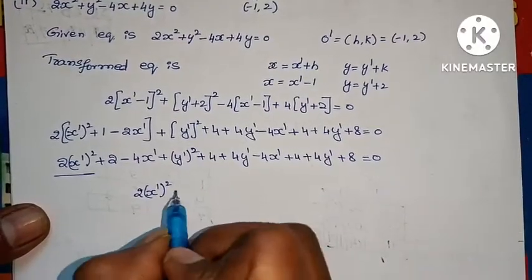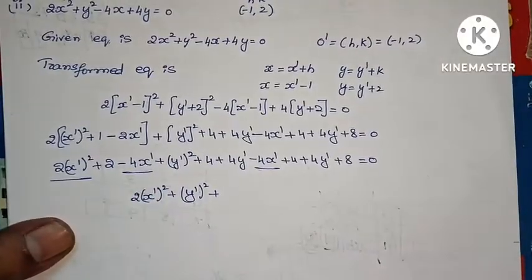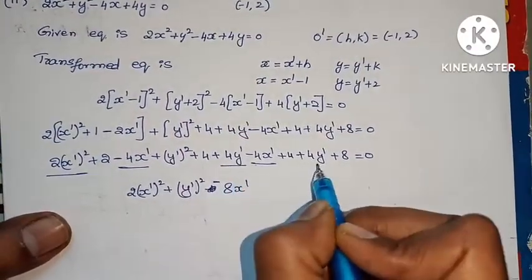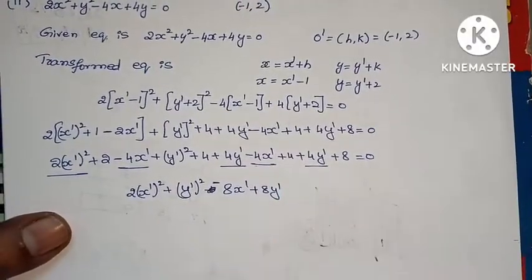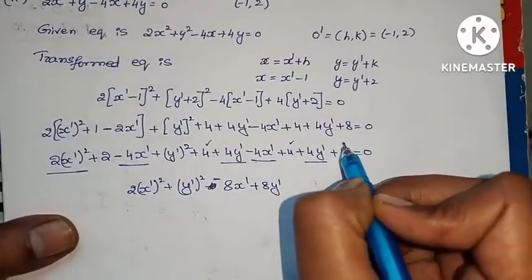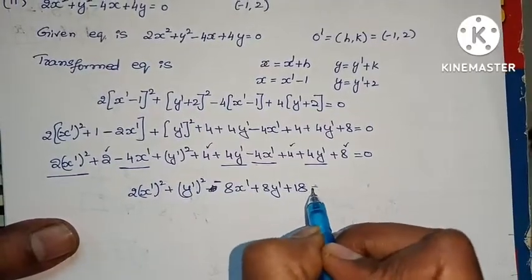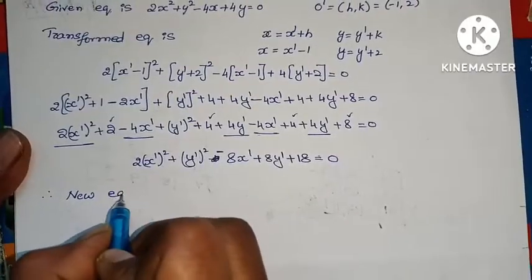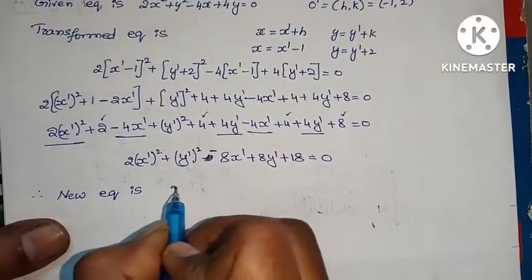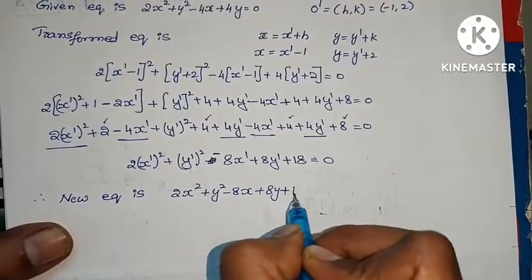The constants are 4 plus 4 plus 8 plus 2 equals 18. So the new transformed equation is 2x dash square plus y dash square minus 8x dash plus 8y dash plus 18 equals to 0.